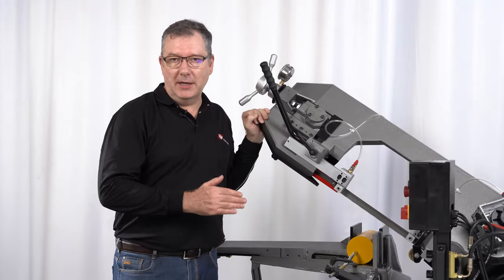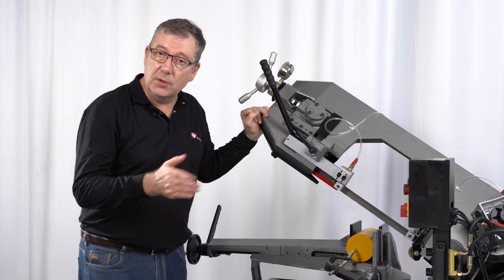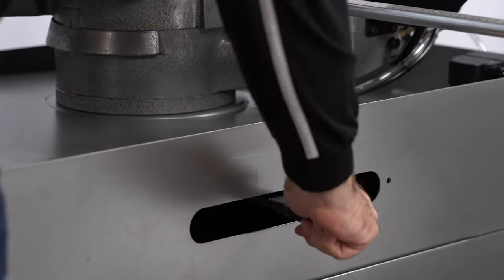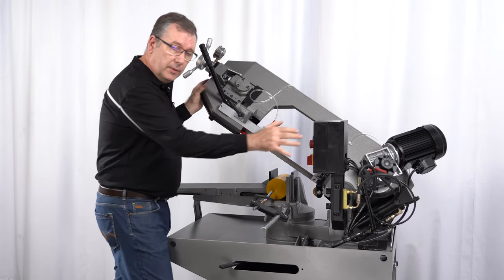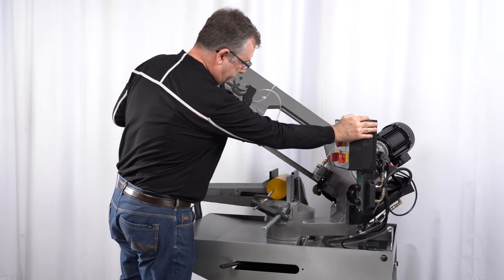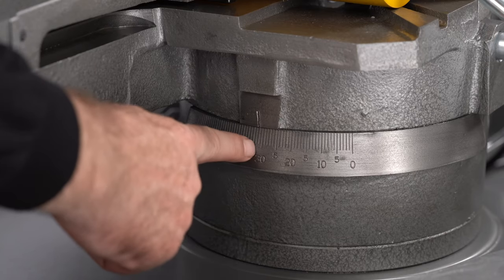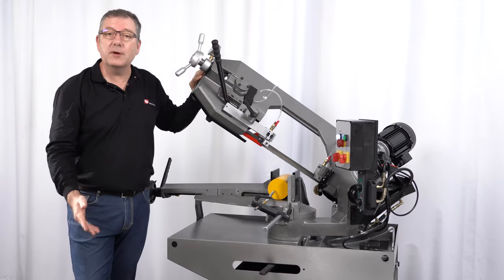This is a mitre cutting bandsaw with single-way cutting up to 60 degrees, and I'm going to show you exactly how that works. First, we release the brake, then we push the machine around to the angle that we want. We can set the angle using the scale down here. Once you have the desired angle, we just lock it off again and we're ready to go.